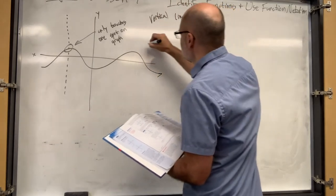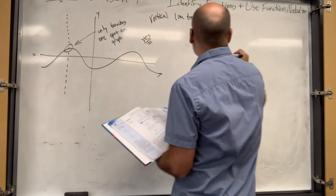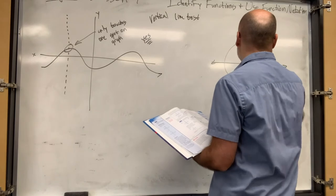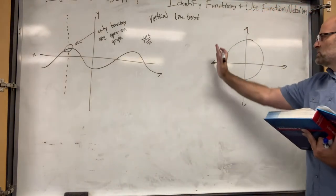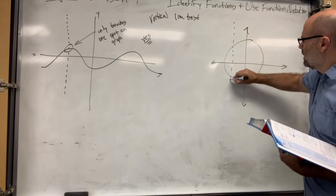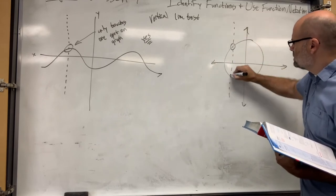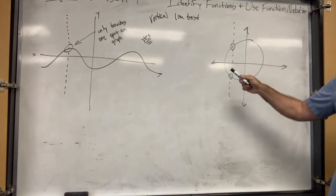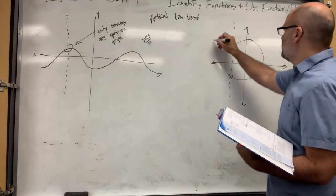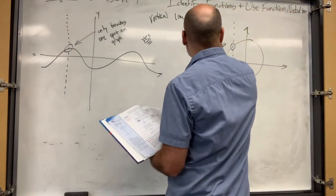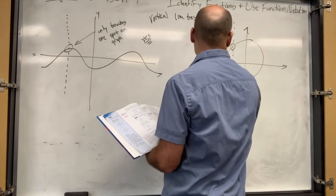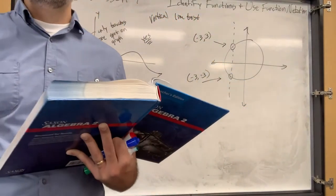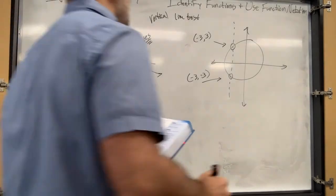This graph - a sine wave - is a function. But what about this graph? A circle is an example of something that's not a function, because when you draw a vertical line it's touching in two spots. Negative 3 on the x-axis goes to both positive 3 and negative 3, so that negative 3 x maps to both 3 and negative 3 - that's not a function.